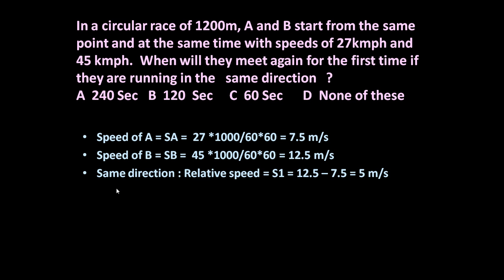Now to determine the time when they will meet again for the first time, let us first determine the relative speed. When A and B are running in the same direction, the relative speed is given by the difference of the two speeds. So 12.5 minus 7.5 is equal to 5 meter per second.